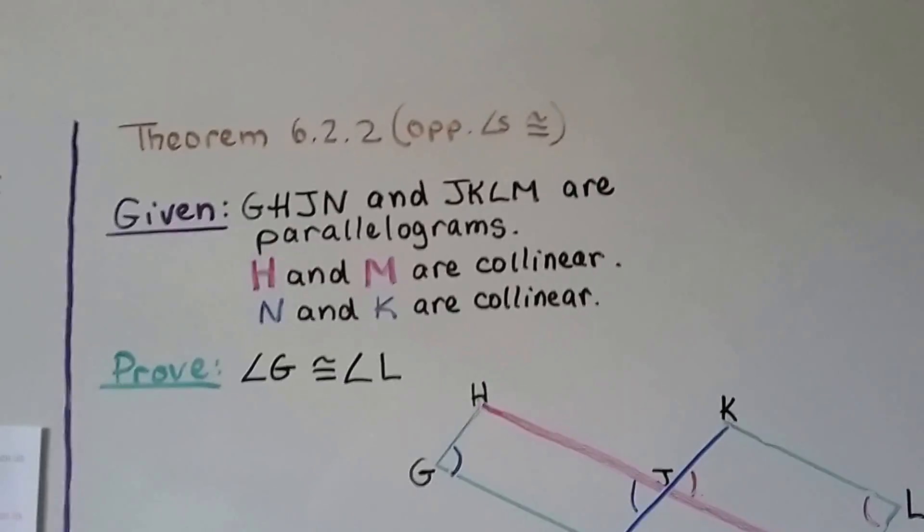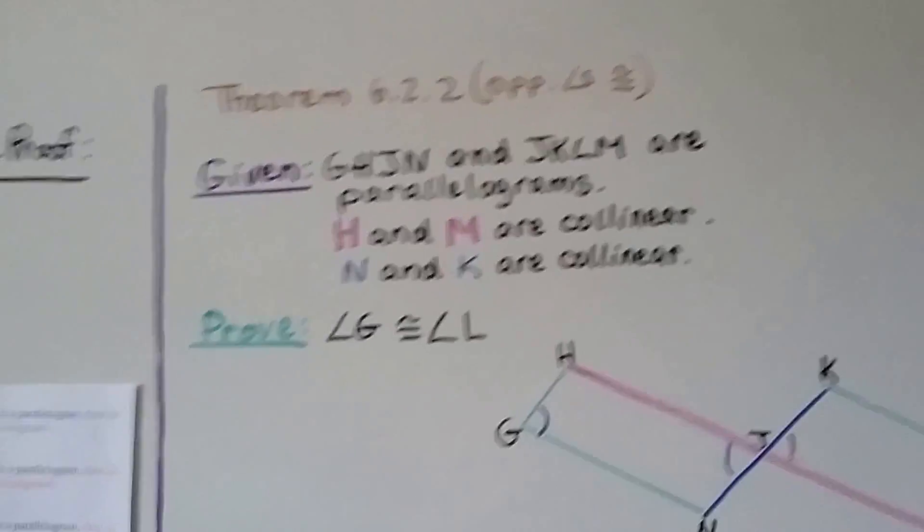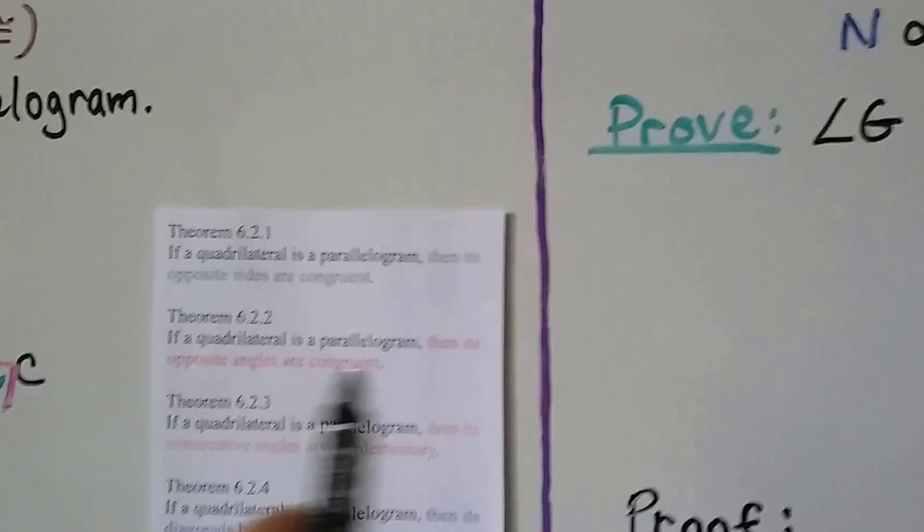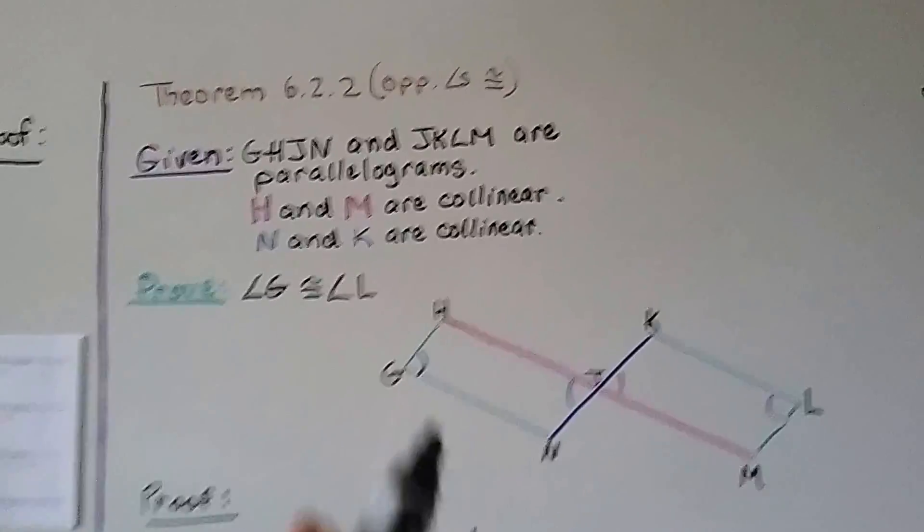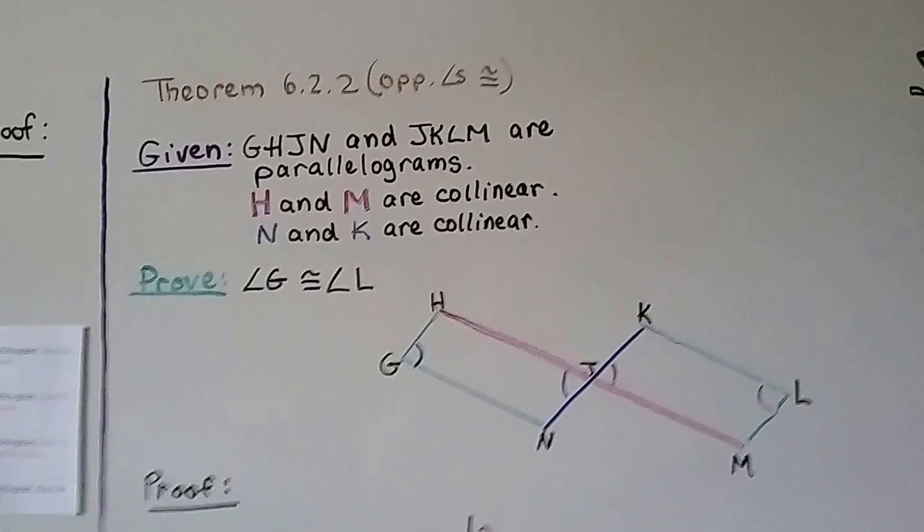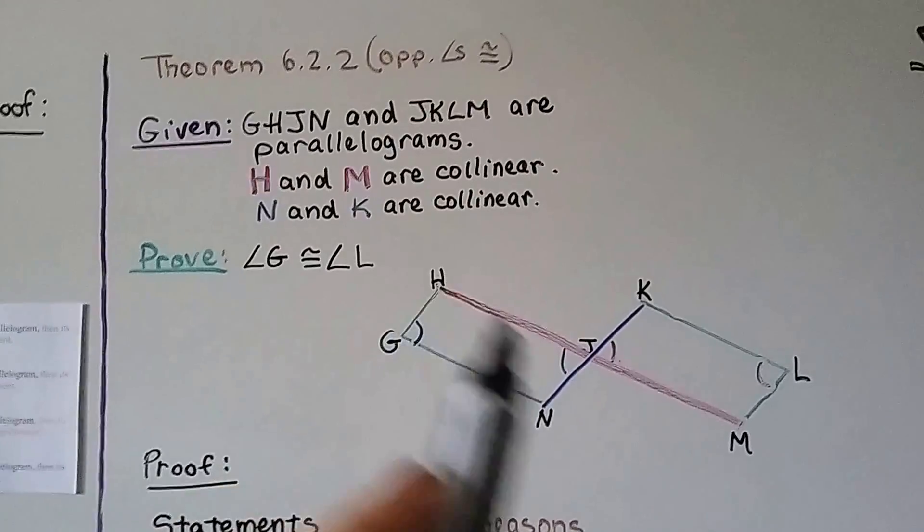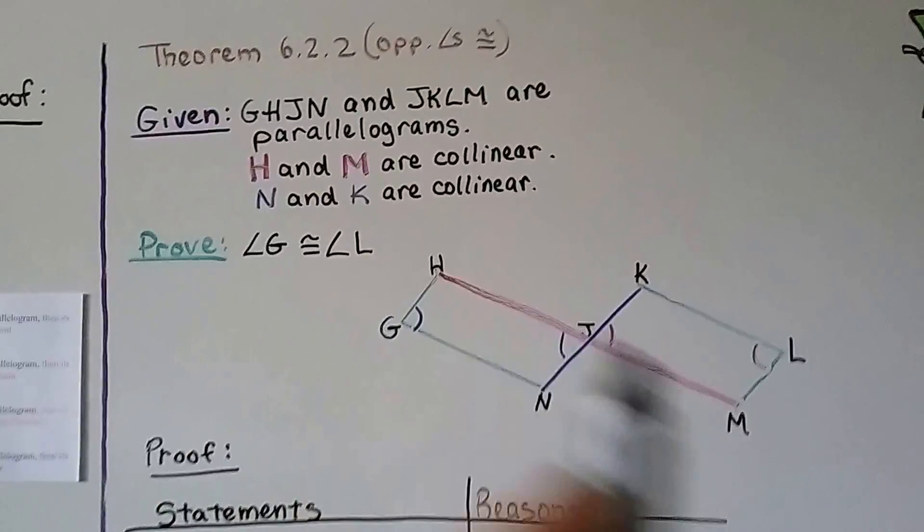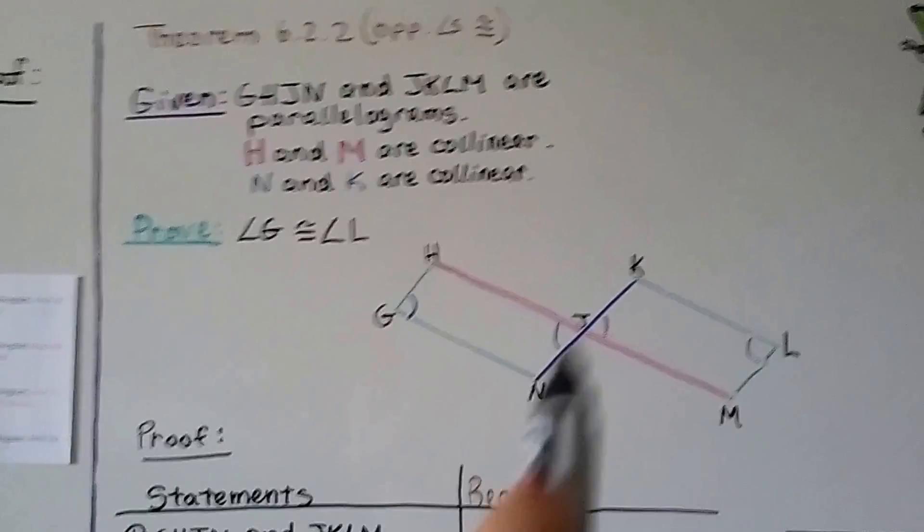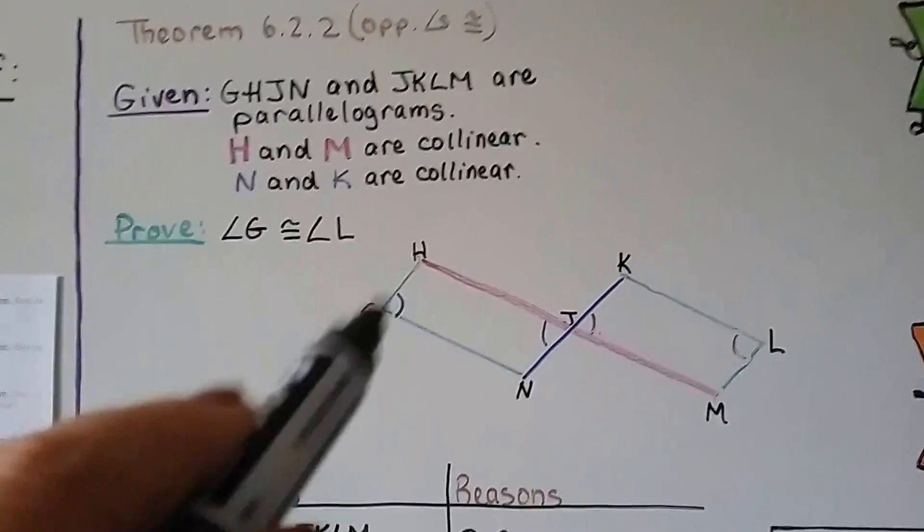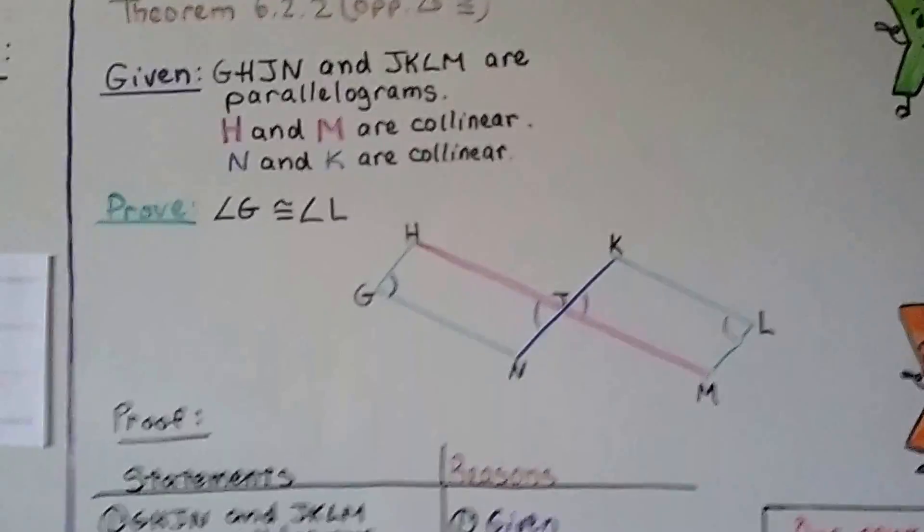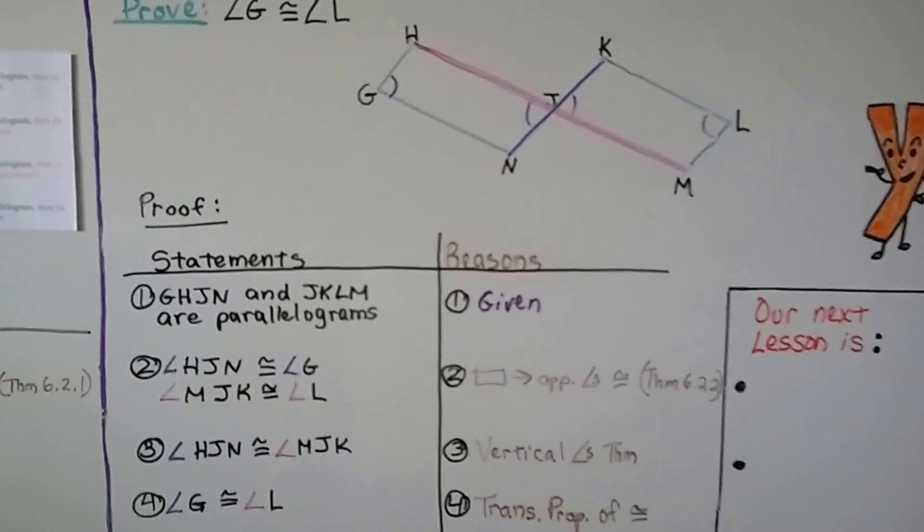Let's do one more short one. This is for 6.2.2 that said opposite angles are congruent. That was this one here. If a quadrilateral is a parallelogram, then its opposite angles are congruent. So it's given that GHJN and JKLM are parallelograms, and H and M are collinear. Remember collinear means they're laying on the same line. And N and K are collinear. They're on the same line. We need to prove that angle G is congruent to angle L, these opposite ones.